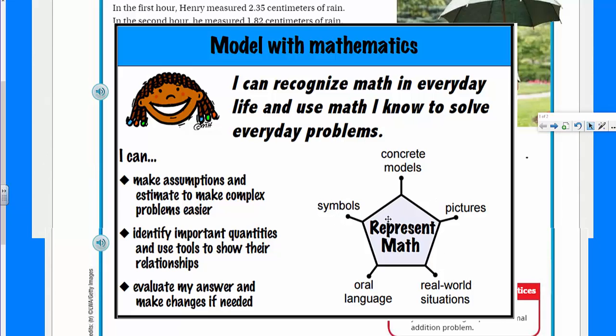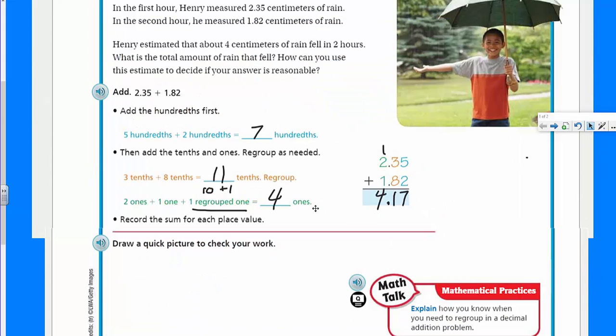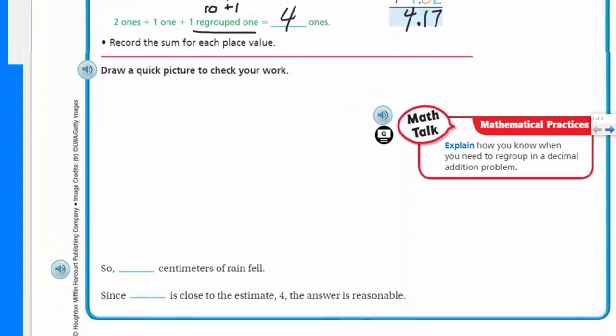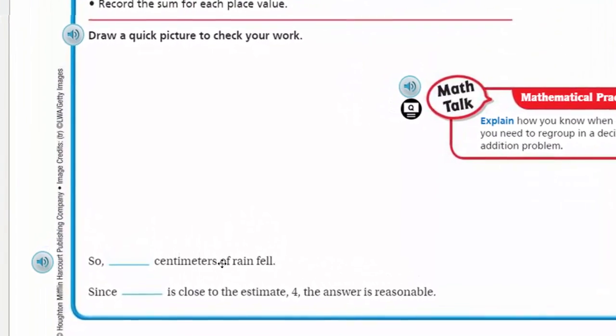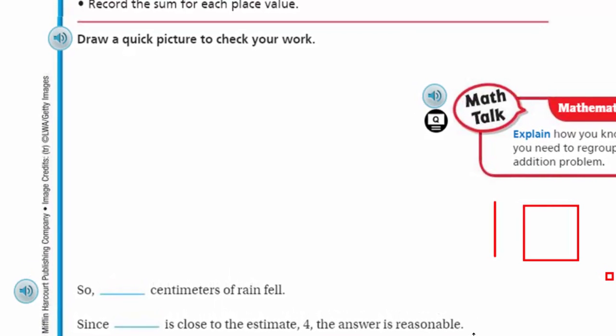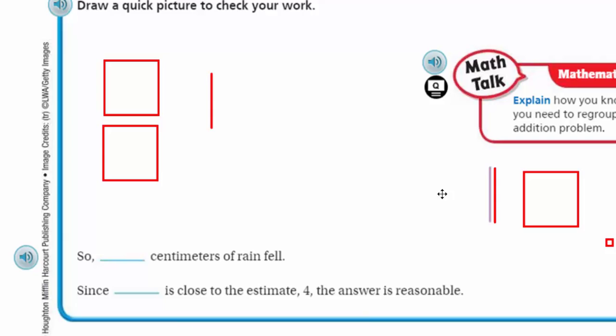Okay, so we are doing more modeling. Modeling with mathematics makes me think of a mathematical practice. Wow, you're so big. Okay, model with mathematics. Yes, mathematical practice four talks about how you can recognize in math an everyday life and use math to solve everyday problems. Yeah, I can make assumptions and estimate. That's what Henry did. He estimated to make complex problems easier. We did check our work with the estimate. Four and seventeen hundredths, that was extremely close to four. So our answer was reasonable.